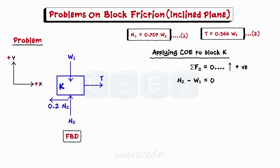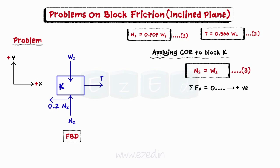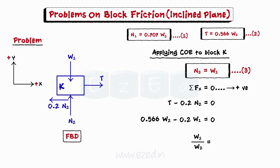Then we equate the summation of all forces in the x direction to 0. On simplifying and substituting the values of tension in the rope and the normal reaction of block K, we are able to find a relation between the weights of the two blocks. This ratio is found to be 2.83.